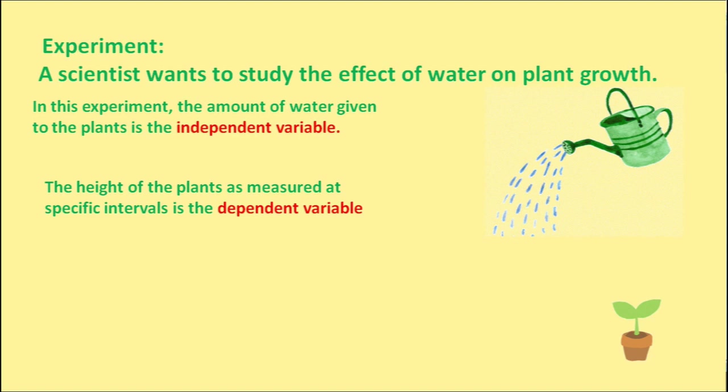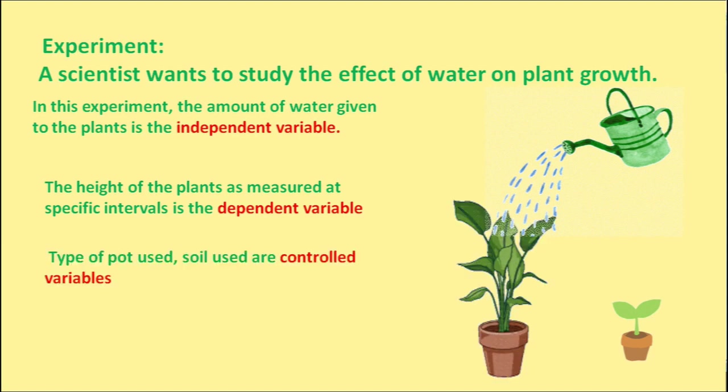The height of plants are measured at specific intervals is the dependent variables. Type of pot used, soil used are controlled variables.